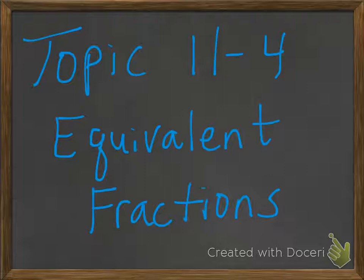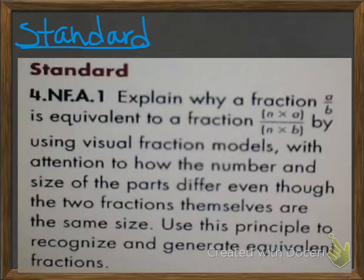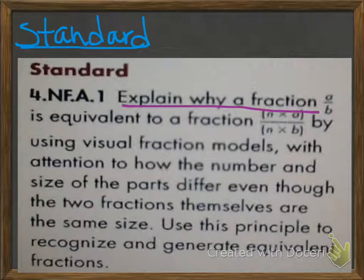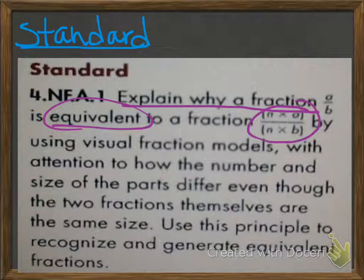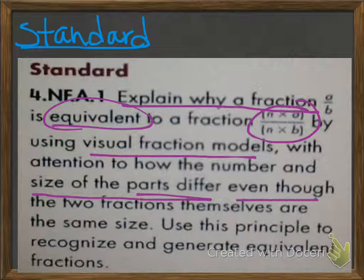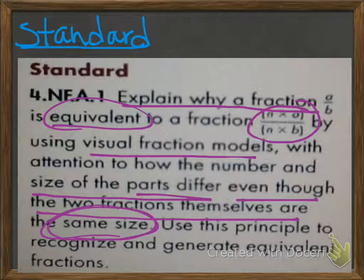So far, you've used a fraction to name part of a whole. In this lesson, you're going to learn how to find two different fractions that name the same part of a whole. Our standard is to explain why a fraction a over b is equivalent, or the same, to a fraction n times a over n times b, by using visual fraction models with attention to how the number and size of the parts differ, even though the two fractions themselves are the same size. We're going to use this principle to recognize and generate equivalent fractions.